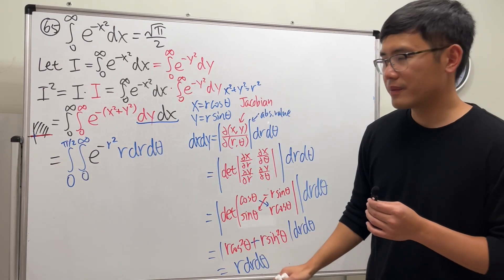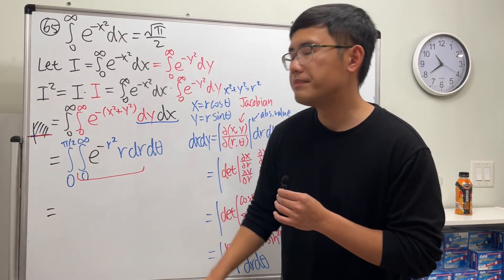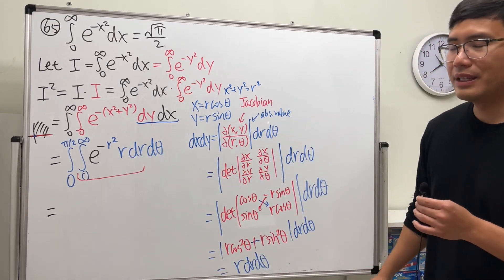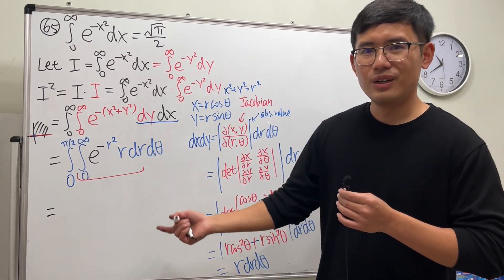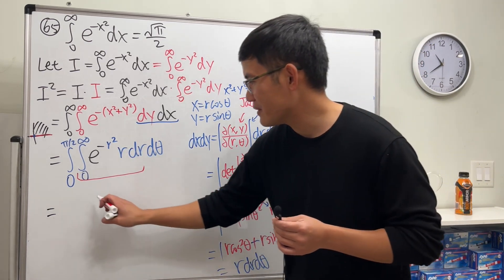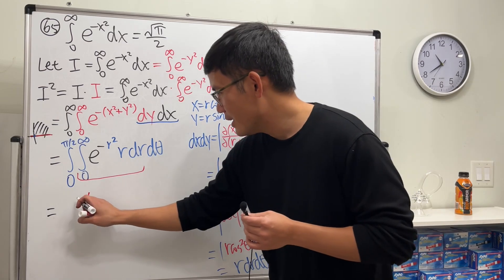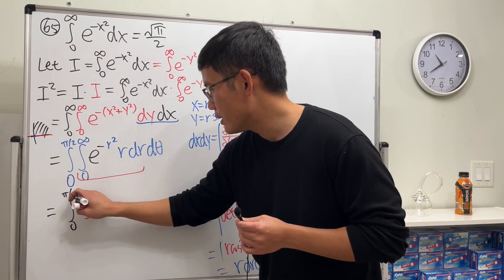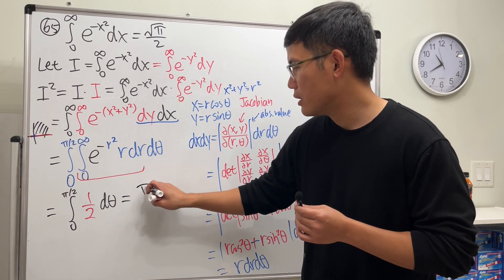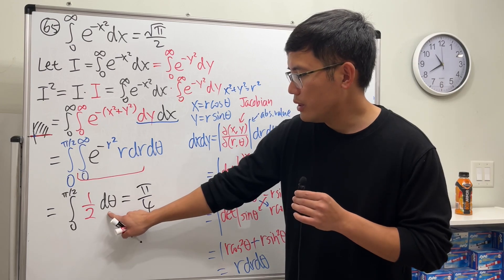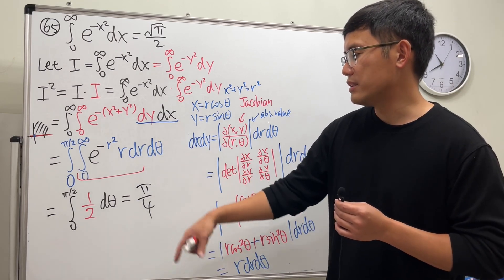We do the inside integral first using u-substitution. This looks like an integral we computed earlier — the answer is one half. Then we integrate from zero to pi over two d-theta: integrating gives theta, evaluated from zero to pi over two. One half times pi over two is pi over four. So the result is pi over four.